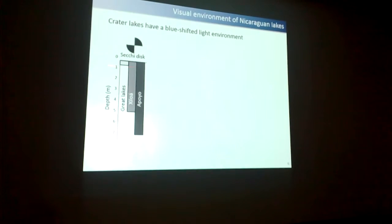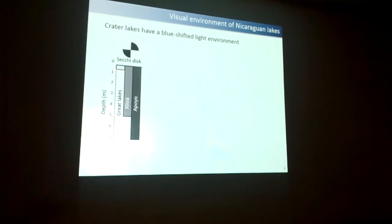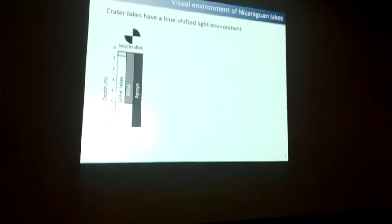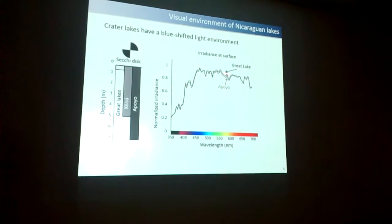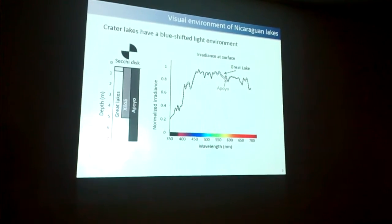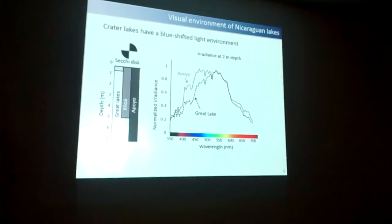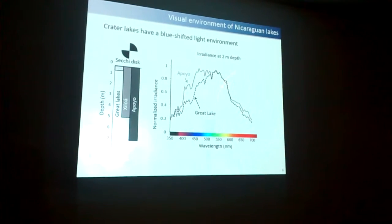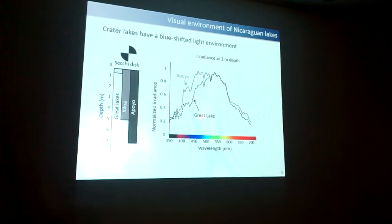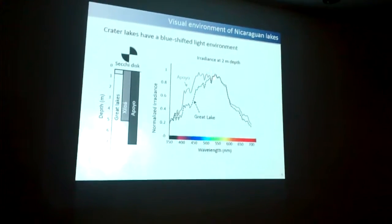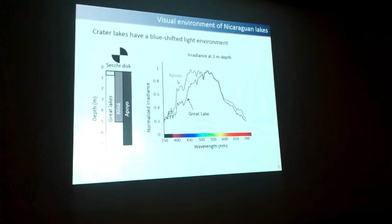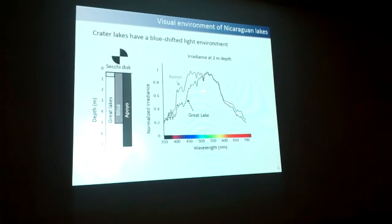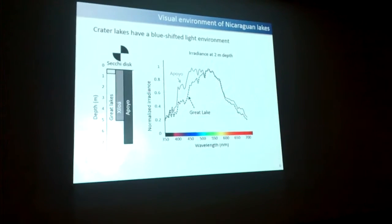If you take a Secchi disk measurement, in the great lake you can see only half a meter, while in the crater lakes you can see up to 7 meters in Lake Apoyo and almost 5 meters in Lake Xiloá. We can also measure irradiance: at the surface the irradiance is the same in both lakes, but at 2 meters deep we see a great difference. Water filters out the reds in both lakes, but in Lake Apoyo the blue light is barely filtered, whereas in the great lakes the blue light is filtered. So we have a red-shifted environment in the great lakes and a blue-shifted environment in the crater lakes.